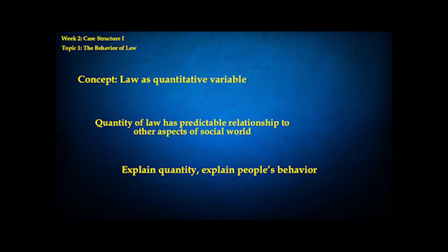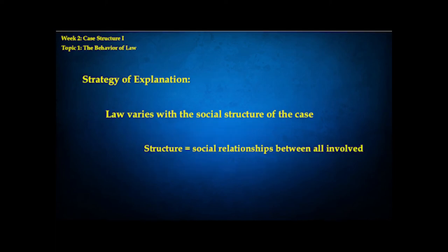You explain the quantity and you explain when people are likely to make different decisions, even if they're taking different roles in the case. So how do we explain the quantity of law? The strategy of explanation in this theory is purely sociological. It's meant to explain the quantity of law with the social factors involved in the case — and the term here is social structure.